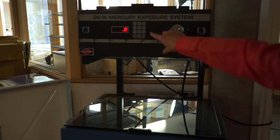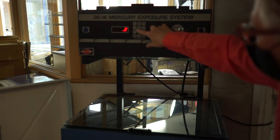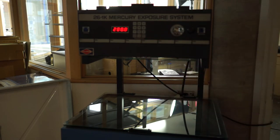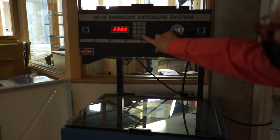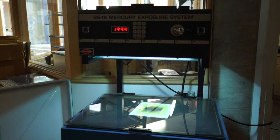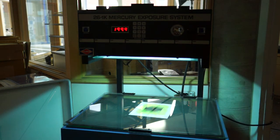So next we dial in an exposure. Let's start out at about 200, which is an average for a thinner negative. And then we hit the start and the light comes on, and it'll take a minute for this to expose.